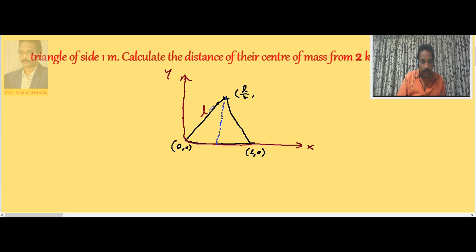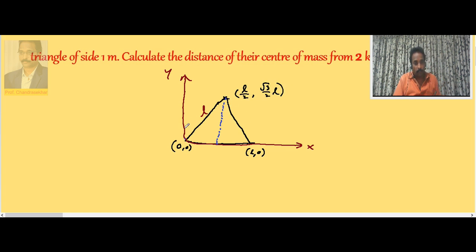The y-coordinate of the third vertex is the height of the perpendicular. Since the side is L and the base is L/2, the height is √(L² − (L/2)²) = (√3/2)L. So for an equilateral triangle with one side on the x-axis, the three coordinates are (0,0), (L, 0), and (L/2, (√3/2)L).